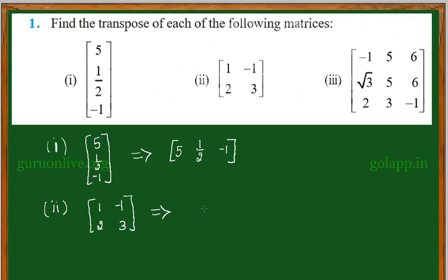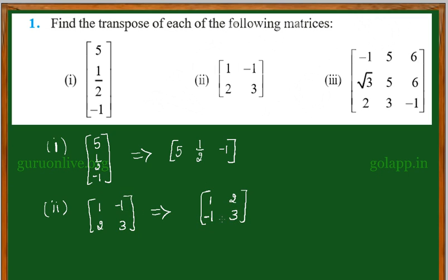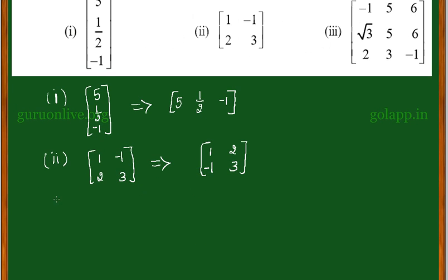Similarly, for the second one, the given matrix is [1, 2; -1, 3]. The transpose is obtained by interchanging rows and columns. The first column becomes the first row: [1, 2], and the second column becomes the second row: [-1, 3]. That is the transpose of that matrix.